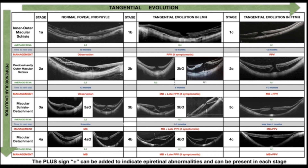The MTM staging system described by Paralini et al. highlights the evolving dynamic nature of the disease. The tangential evolution is explained as subtypes A, B, and C: A has a normal foveal contour, B has a lamellar macular hole, and C has a full thickness macular hole. The perpendicular evolution includes inner or inner-outer macular schisis, predominantly outer macular schisis, schisis with detachment, and macular detachment.